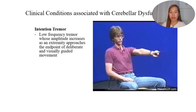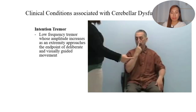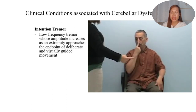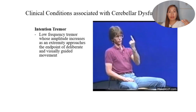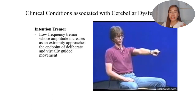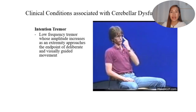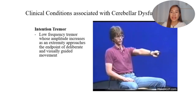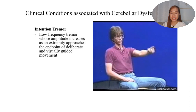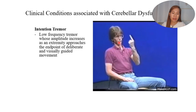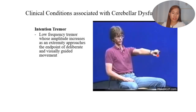Next is intention tremor, defined as a low-frequency tremor whose amplitude increases as an extremity approaches the endpoint of a deliberate and visually guided movement. Intention refers to the fact that the tremor occurs when performing a voluntary action, but is absent at rest. This is distinct from a resting tremor. Intention tremor is associated with cerebellar dysfunction.